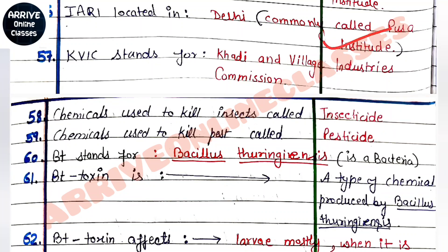KVIC stands for Khadi and Village Industries Commission. The chemicals used to kill insects are called insecticides, and for pests, they are called pesticides.